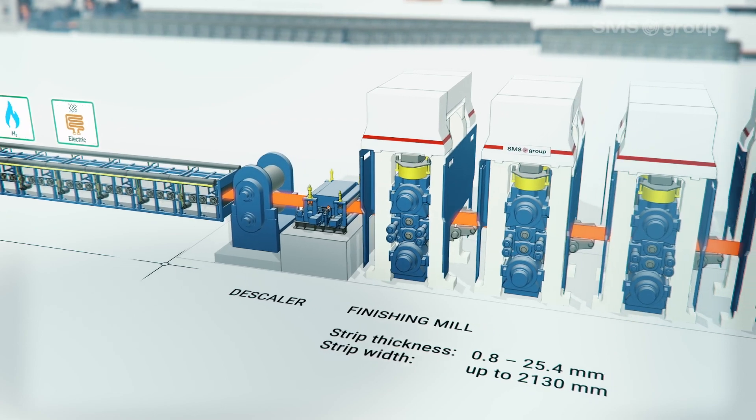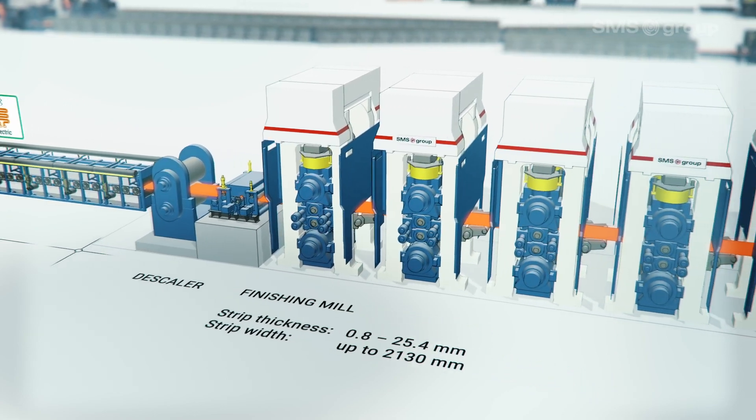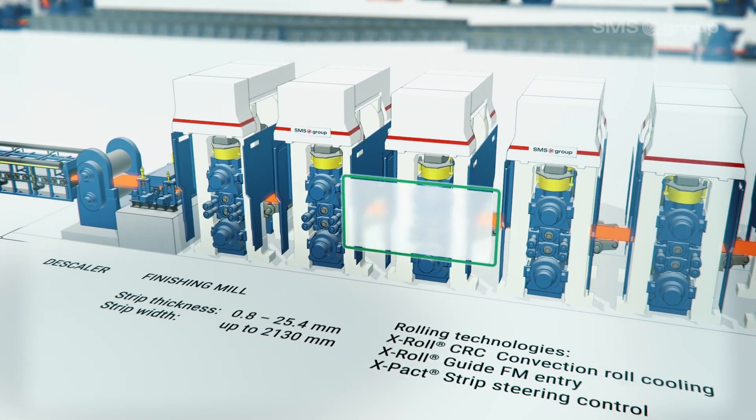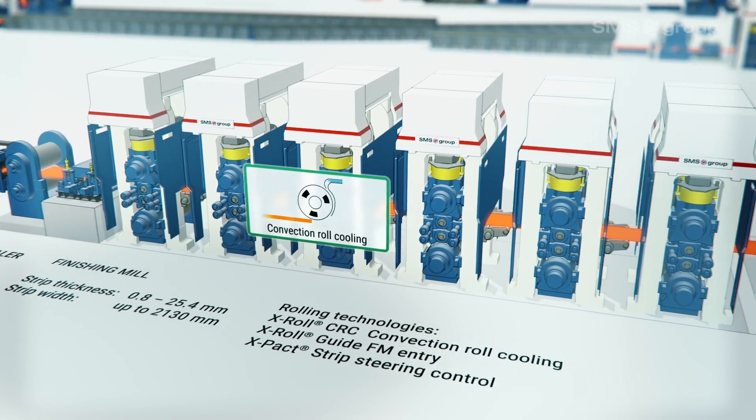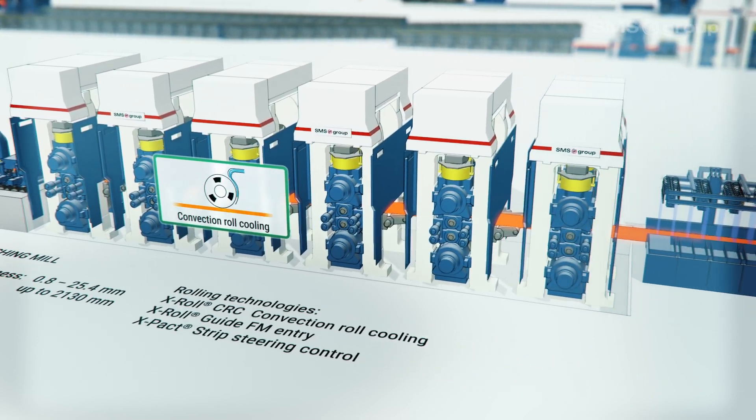The six-stand finishing mill is equipped with the latest technological features, such as our highly efficient convection roll cooling system with energy savings of up to 90%.